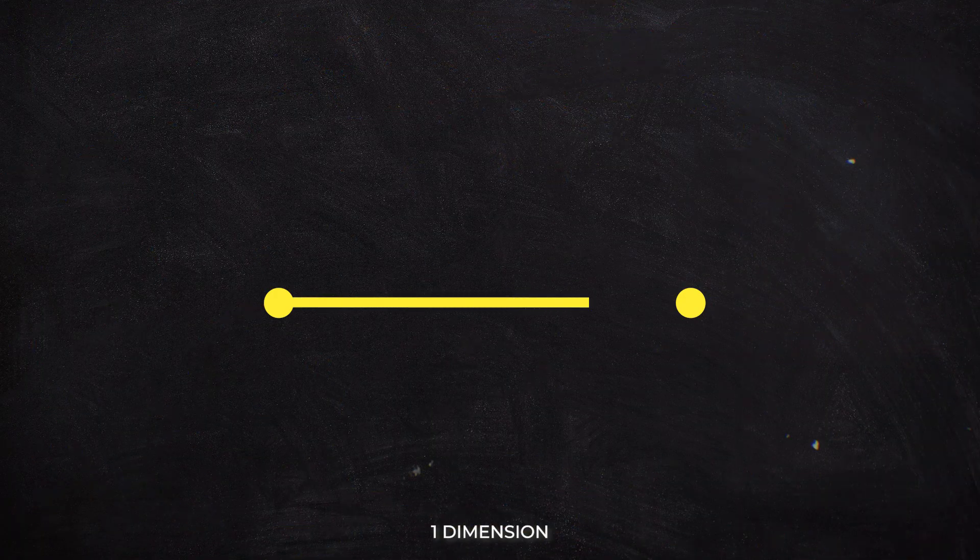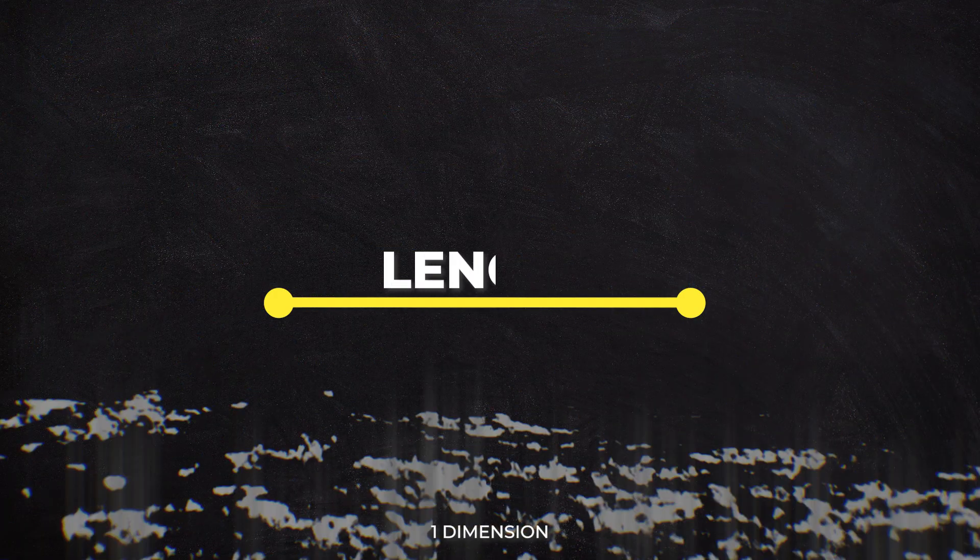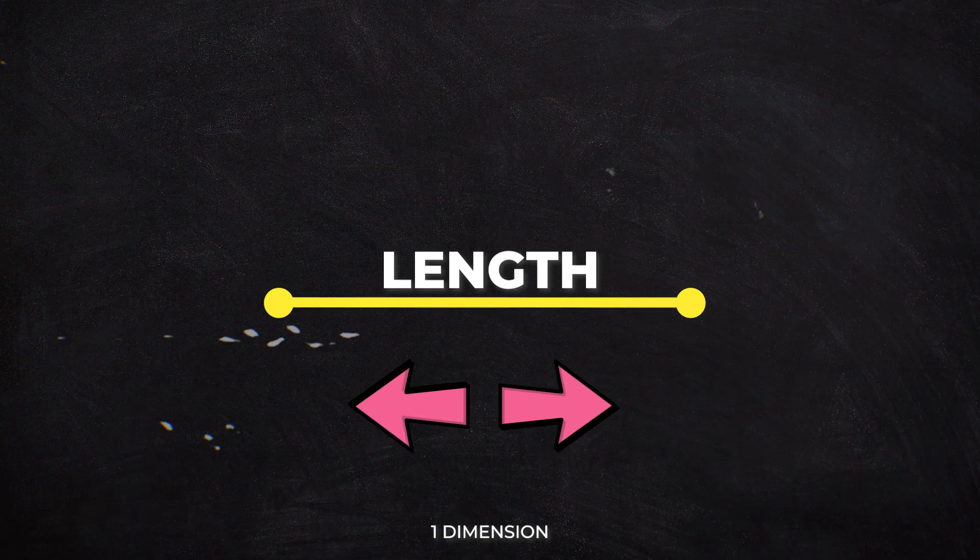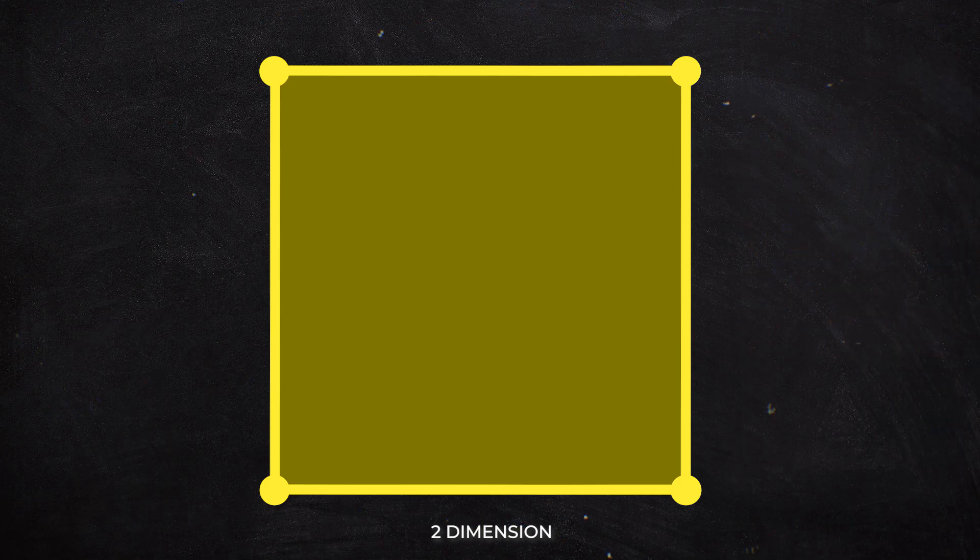The first dimension is just a simple line that connects two points and has only length. This dimension has two directions, left and right.